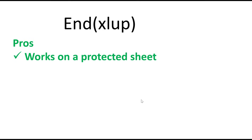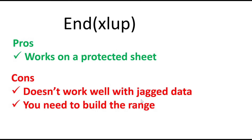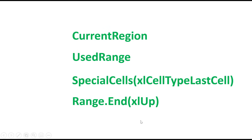The pros of End XLUp: it works on a protected sheet. The cons: it doesn't work well with jagged data, you need to build a range, and the code isn't that simple. We've looked at four methods so far and none of them are suitable for dealing with jagged data. CurrentRegion requires adjacent data. UsedRange includes formatting. SpecialCells has the same issue and also requires saving the worksheet before it updates. And Range.End only works with individual rows or columns. So now let's look at a method that does actually work.